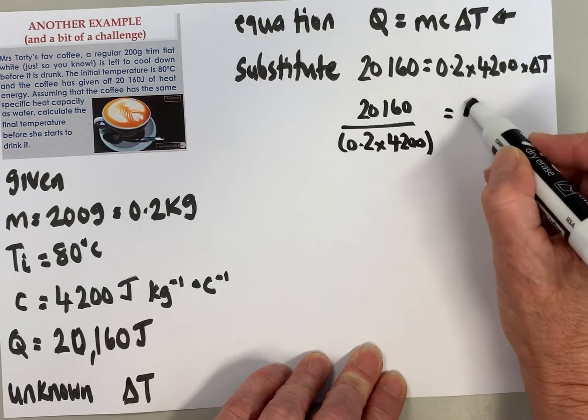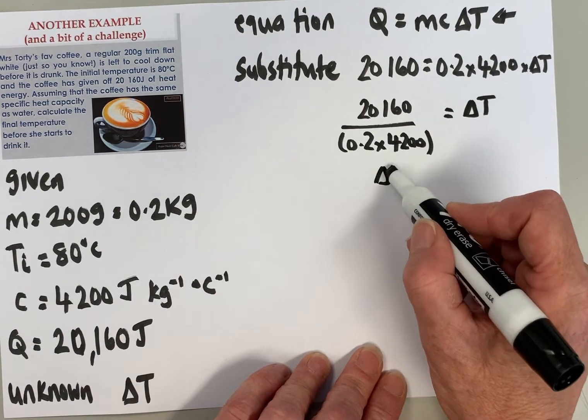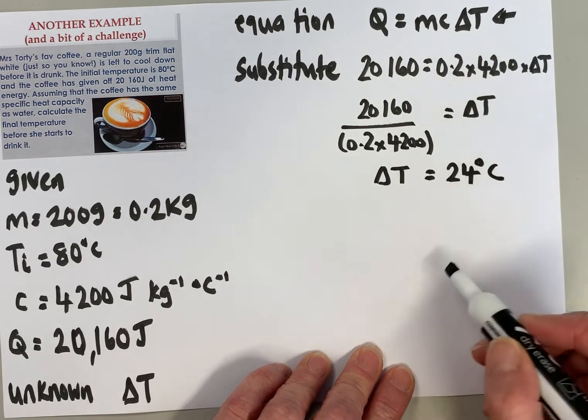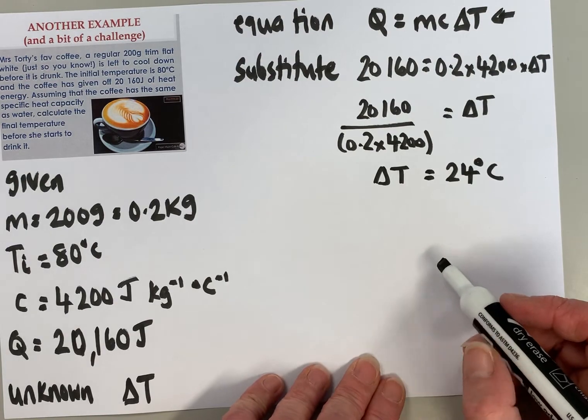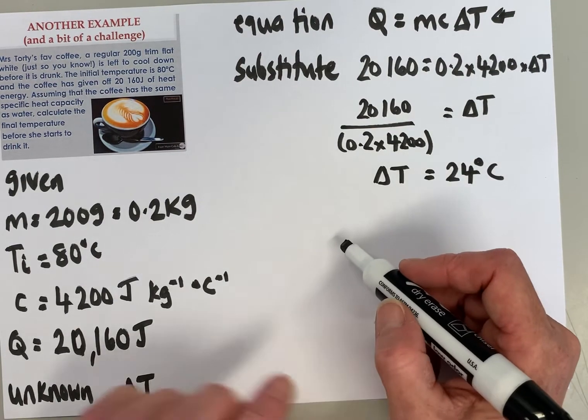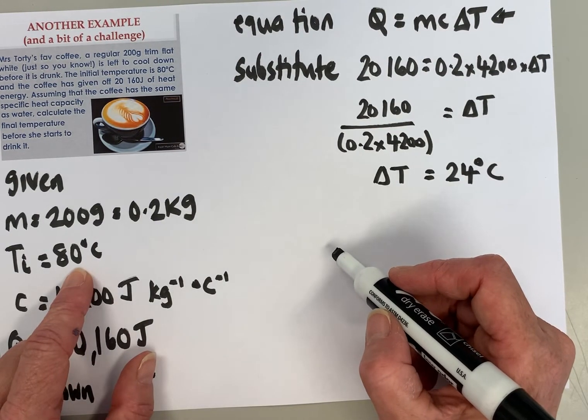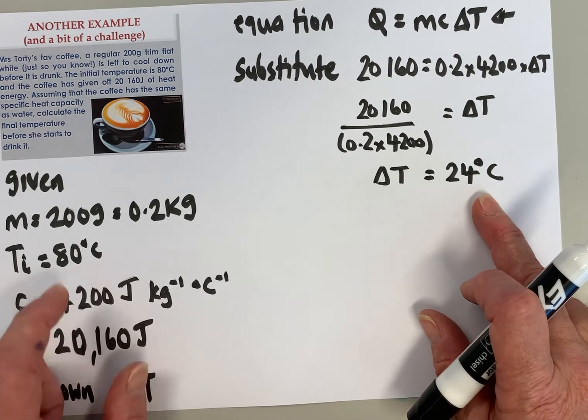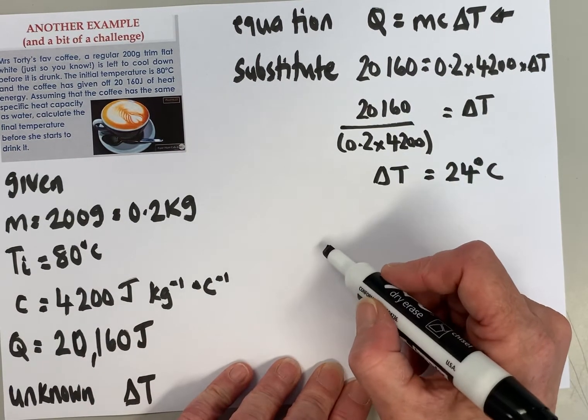So it's 20,160 divided by (0.2 × 4200) will give us ΔT, and that gives us a ΔT of 24 degrees.